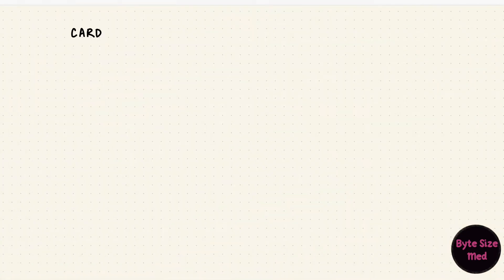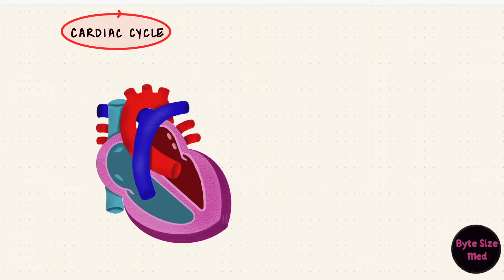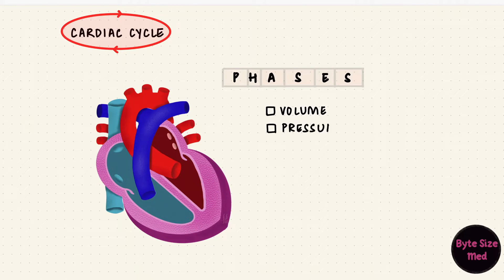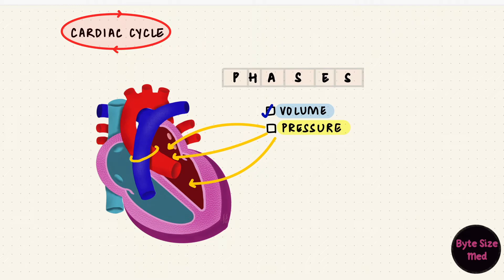The cardiac cycle includes a bunch of different things that happen in the heart between beats. Each cycle can be divided into phases, and during each phase there are changes in volume and in pressure. I went over some of the volume changes in part 2. The pressure changes happen in the atria, the ventricles, and the big vessels — that's the pulmonary trunk and the aorta. We went over atrial pressure changes in part 3.